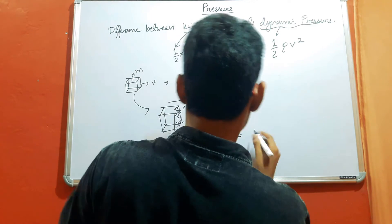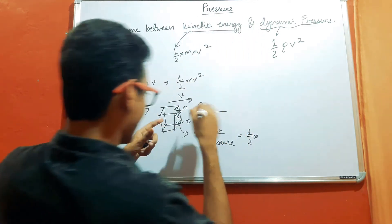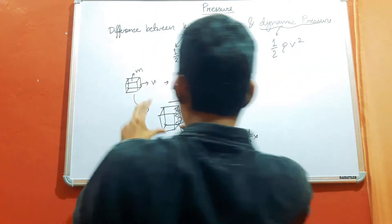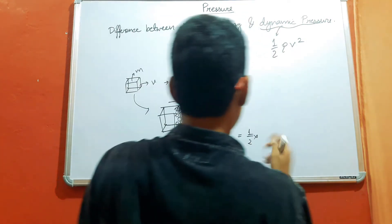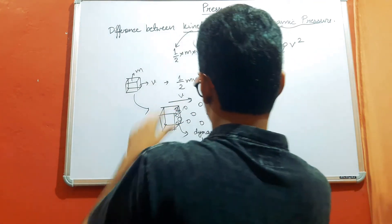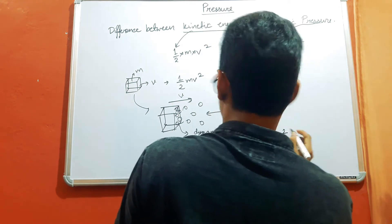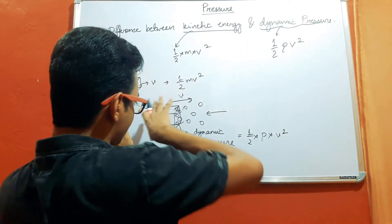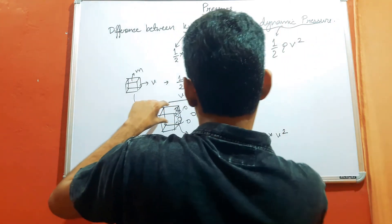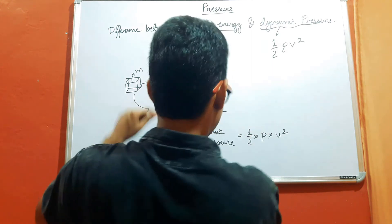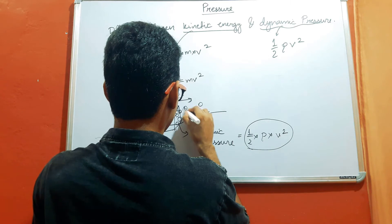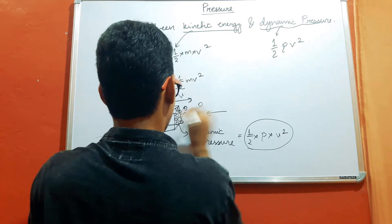This dynamic pressure is given by half into the density of the air, because it is the air molecules that are hitting this particle due to its motion — so the density of air multiplied by the velocity squared. The relative velocity will be the same, because if this particle is moving in this direction with velocity v, then relative to this particle, the air molecules will move in this direction with the same velocity v.